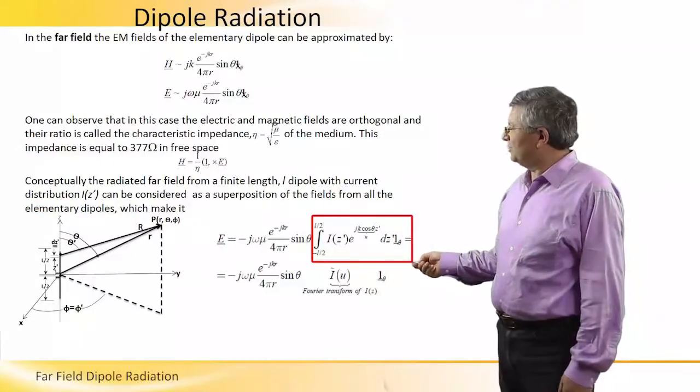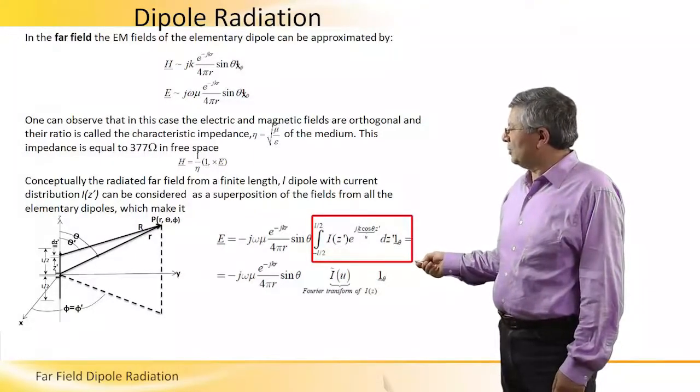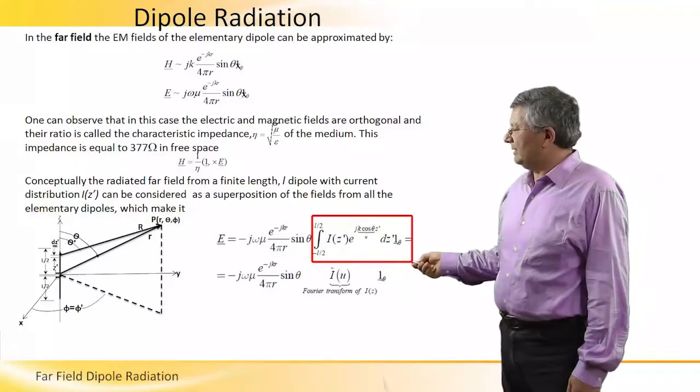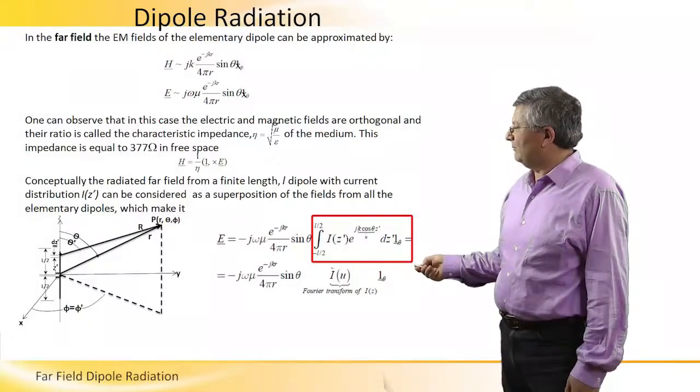What's interesting to note here is that if we denote k cosine theta by u, we get a Fourier transform under the integral.